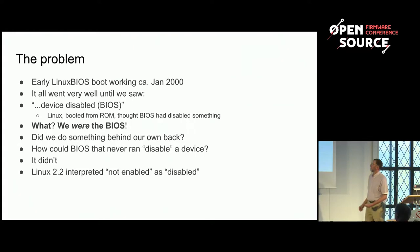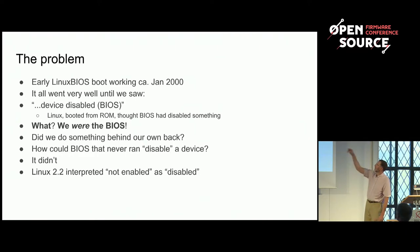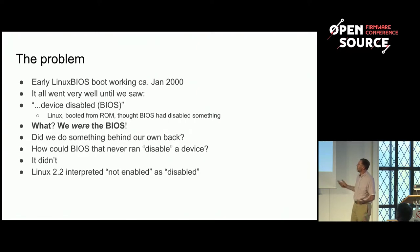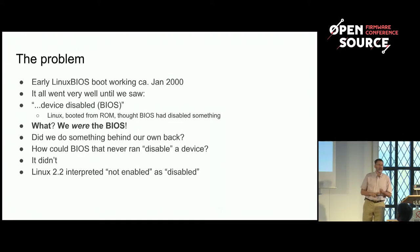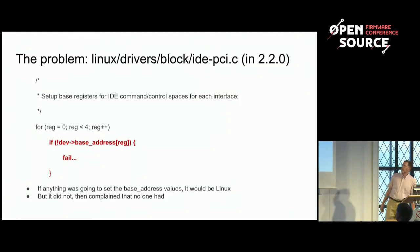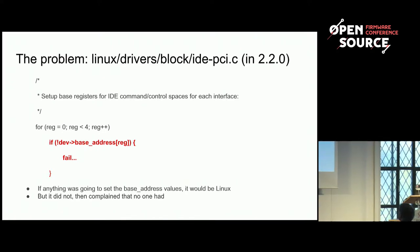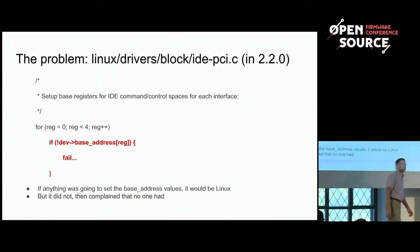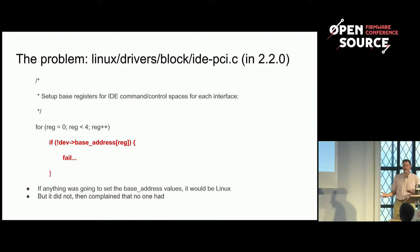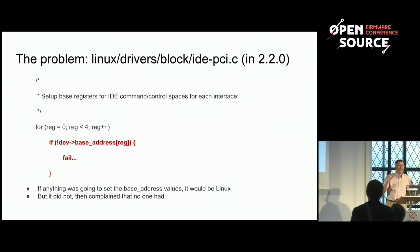Here's the problem. I stumbled through SDRAM init and early Linux startup, and then I plugged in an IDE device and it said 'device disabled BIOS.' I thought, that can't be right — I am the BIOS. We didn't do something behind the back; we failed to do something. Linux 2.2 back then interpreted 'not enabled' as 'disabled' in critical places — specifically in ipci.c, there's a loop across base address registers, and if any one was zero, it would say the BIOS had disabled the IDE PCI device. Which of course we hadn't done — but we hadn't enabled it.